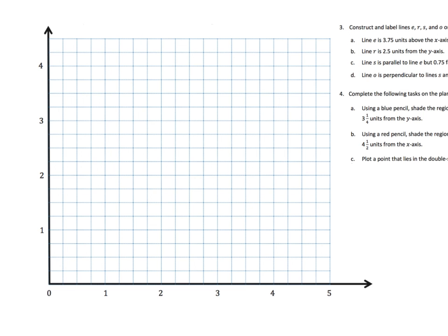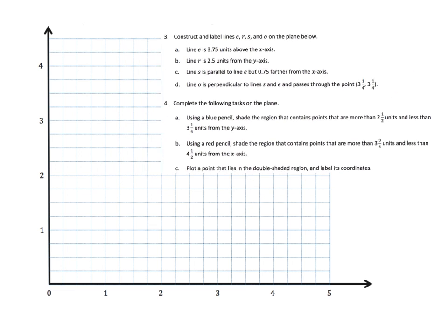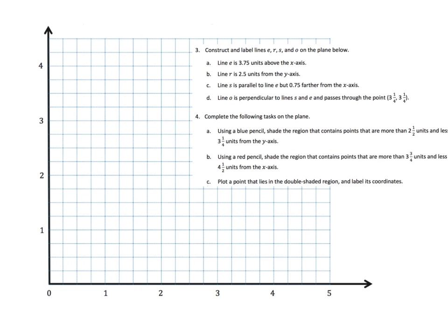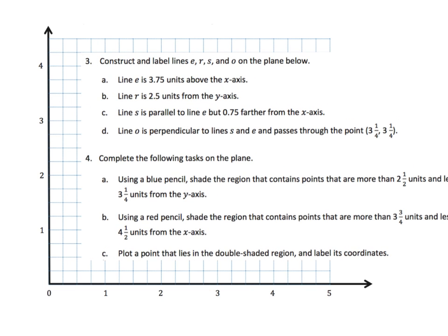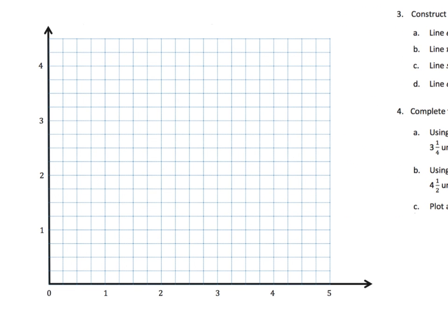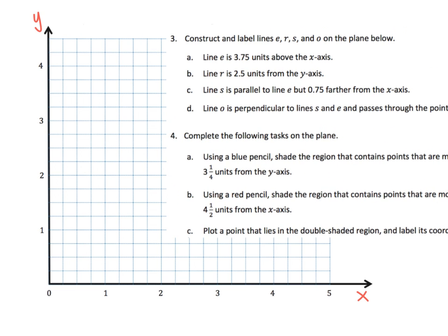So here, this is just more of that same kind of concept. Just lots of directions for the students to follow. And first step says construct and label lines E, R, S, and O. And then here's your directions. E is going to be 3.75 units above the x-axis. So what does that mean? It's going to be, here's the x-axis, and here's the y-axis, and it's going to be 3.75 above the x-axis.